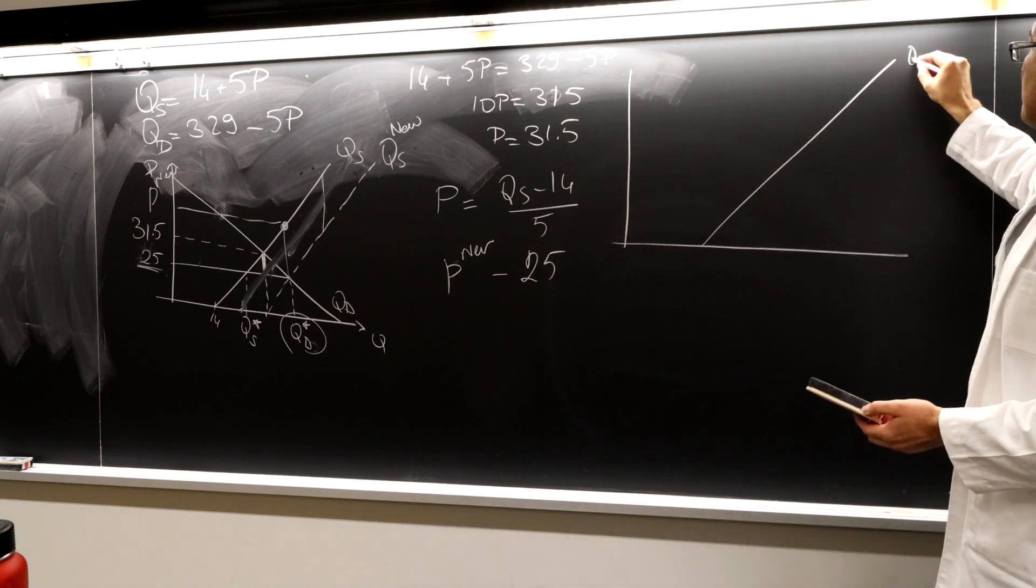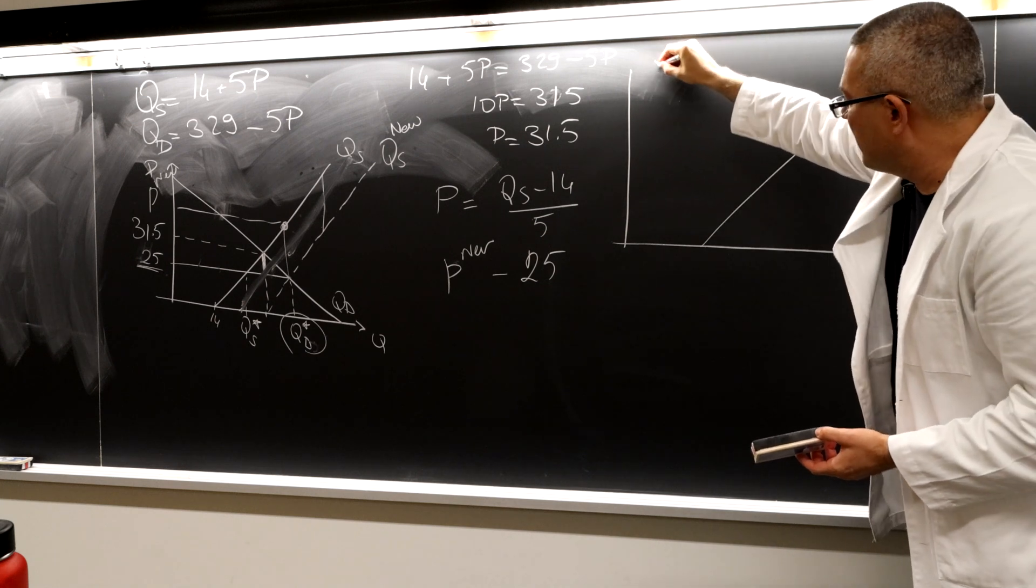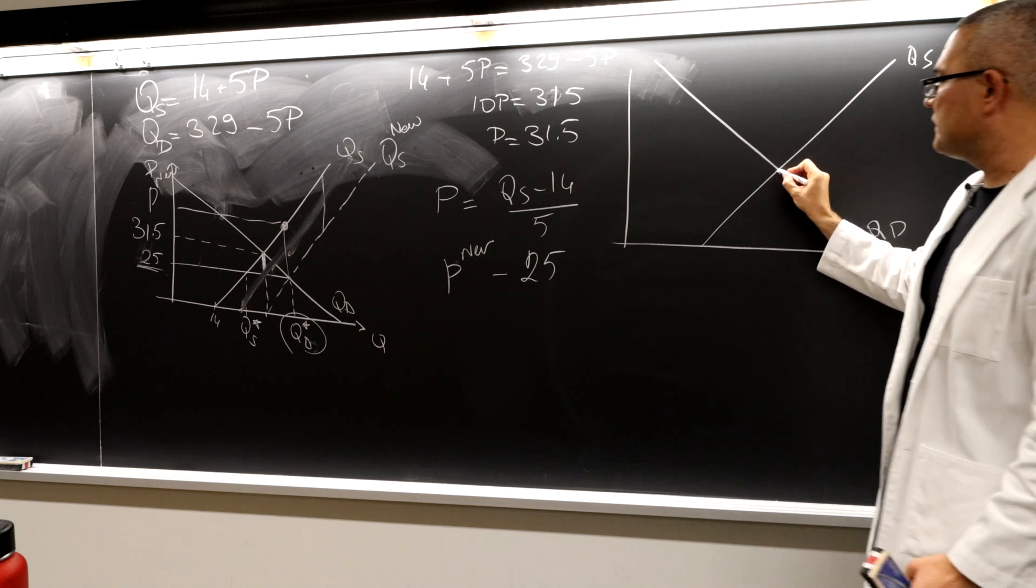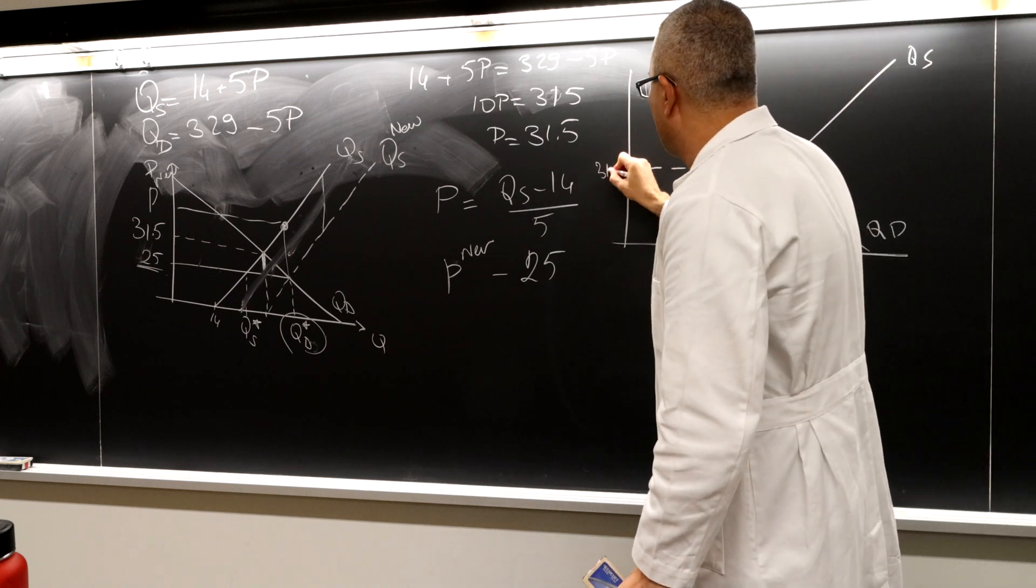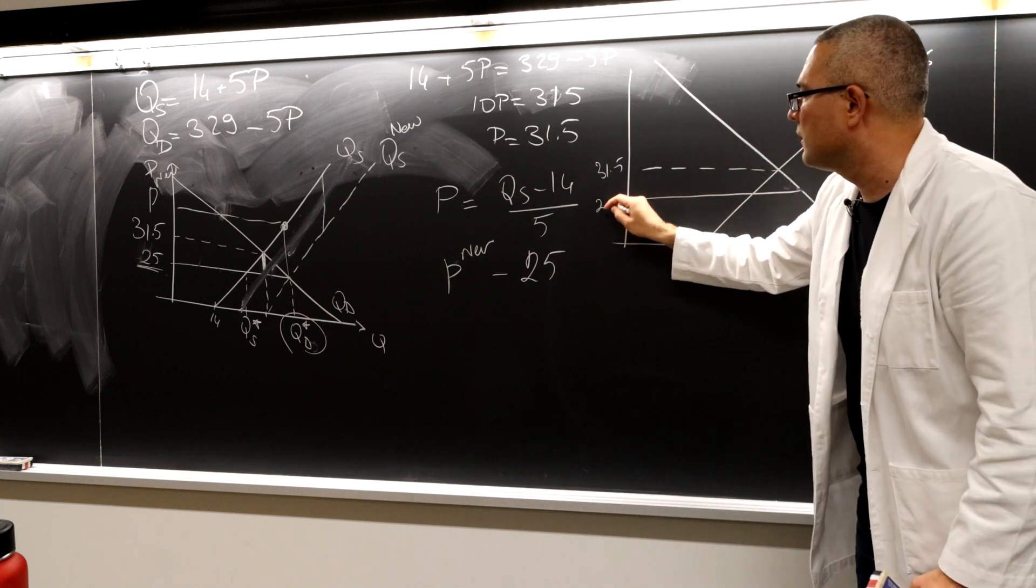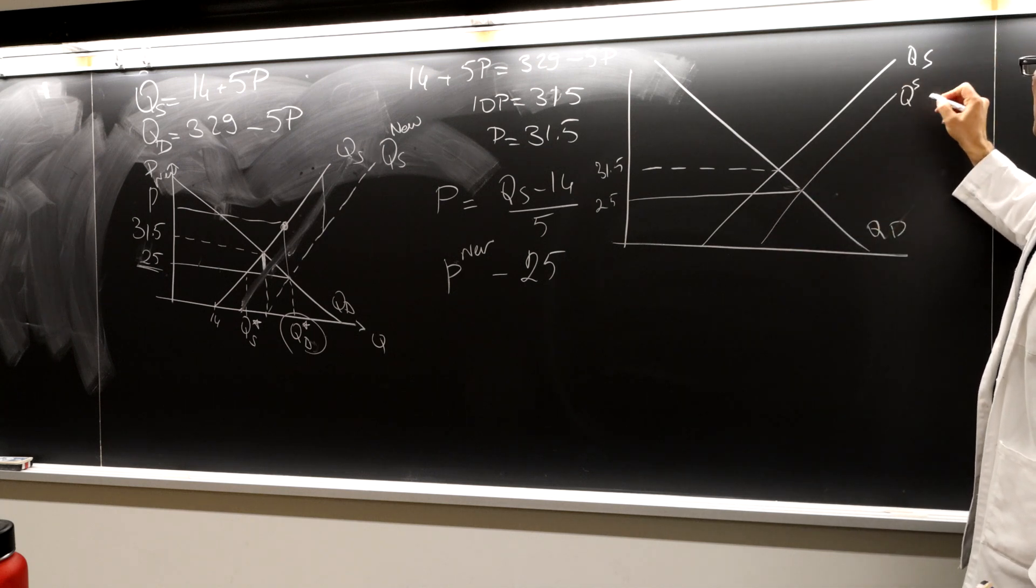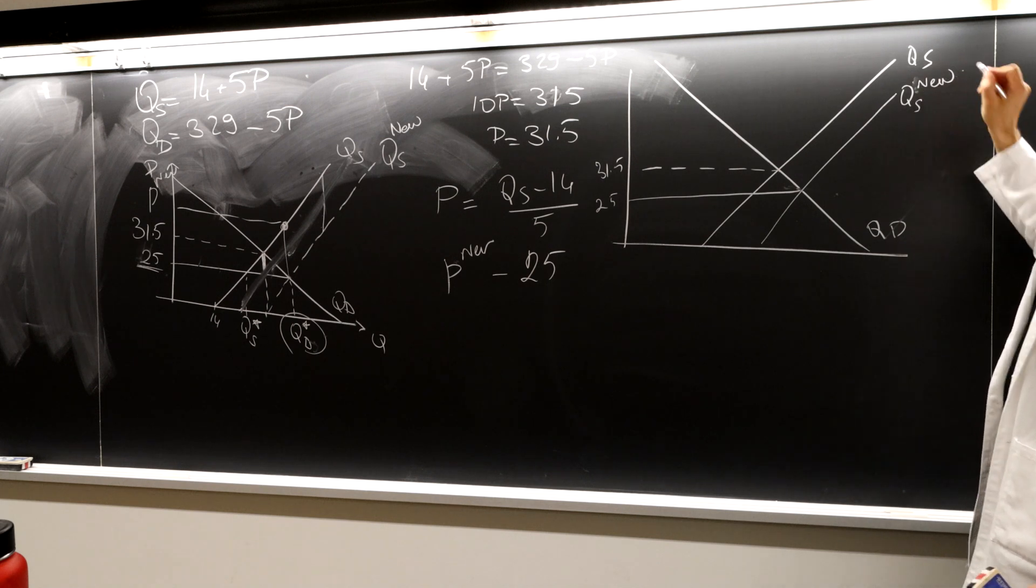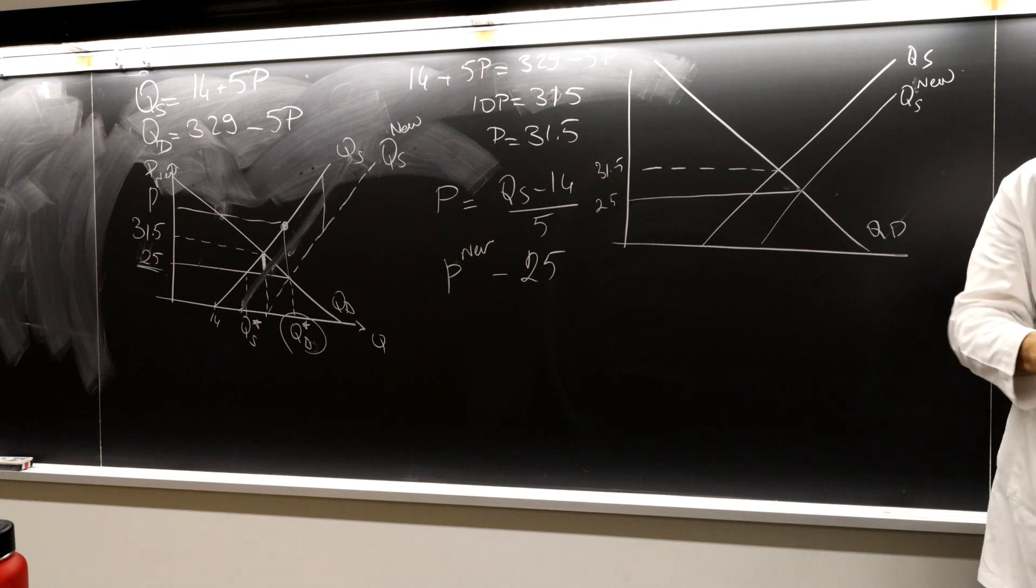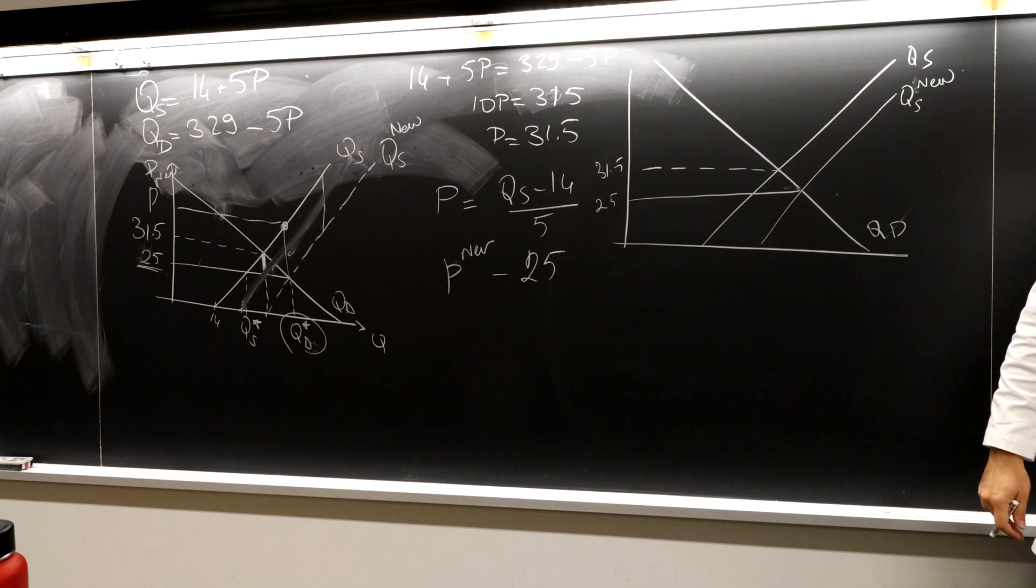This is the supply curve. I'm going to denote the demand curve here, QD. And then the thing is, the new, so this is, don't forget the 31.5. But we want price to be $25. And so this has to be the new supply curve. I put the old supply curve there on purpose because I know it's going to confuse you.